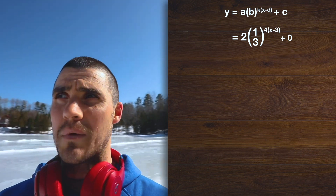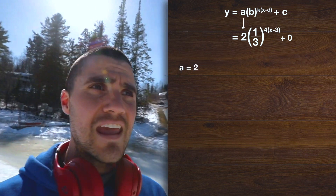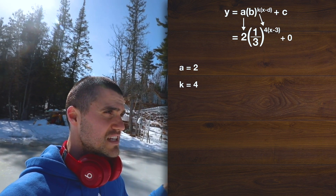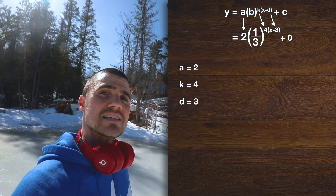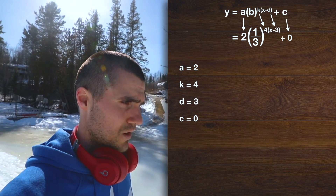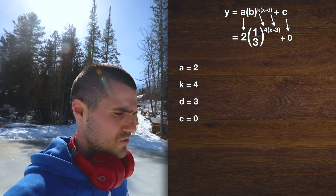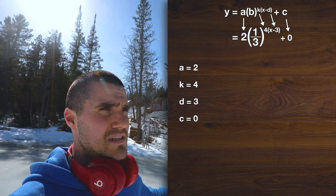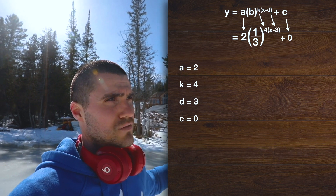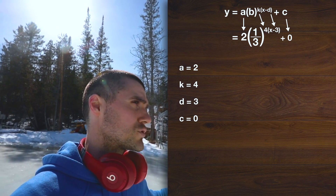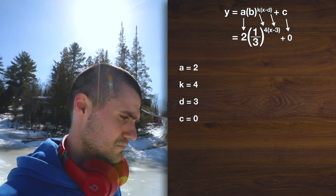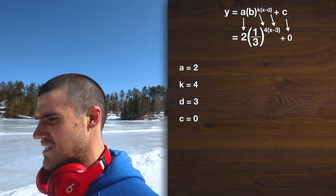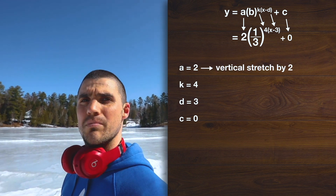We can get the transformation values. Notice that the a value is 2, the k value is 4, the d value is 3, and the c value is 0. From here it's really easy to state the transformations, because those transformation values are basically universal for any function we're using — whether we're dealing with an exponential function, a quadratic, or whatever, it doesn't really matter at this point. So what does an a value of 2 mean? It means that there's a vertical stretch by a factor of 2.